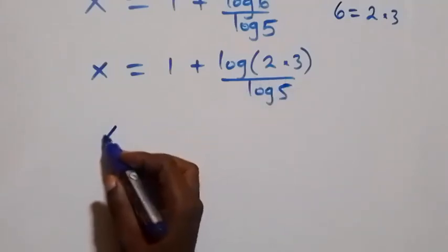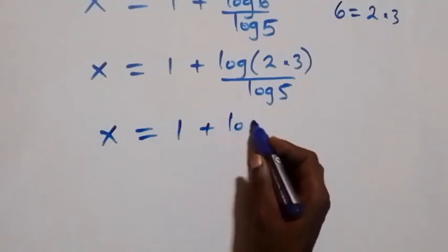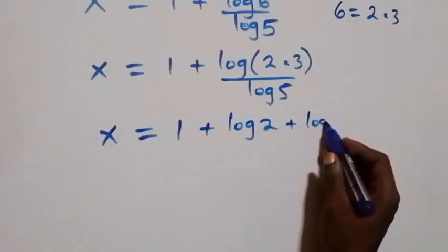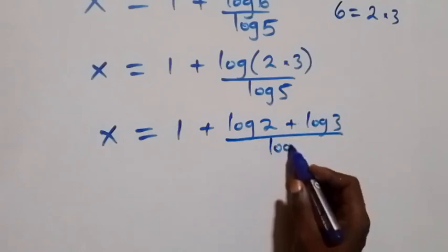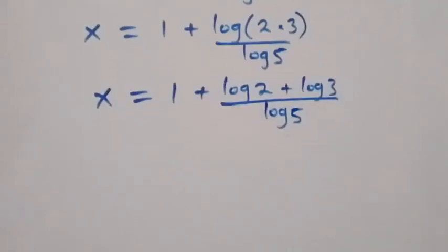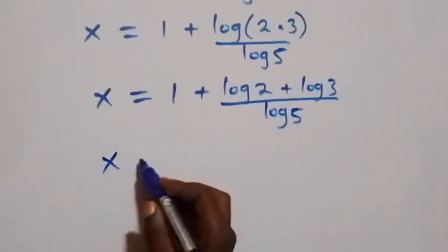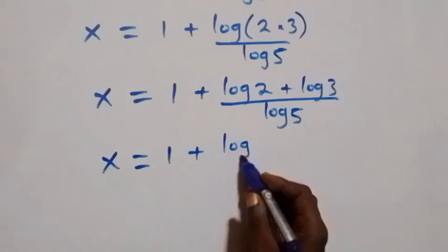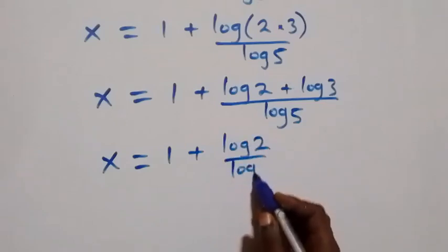Writing log 6 as log of 2 times 3, what we have here becomes x equals to 1 plus log 2 plus log 3, all over log 5. From here we also separate this fraction into two fractions and have x equals to 1 plus log 2 over log 5.